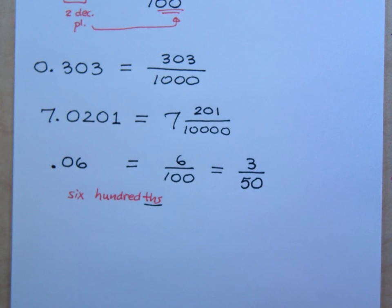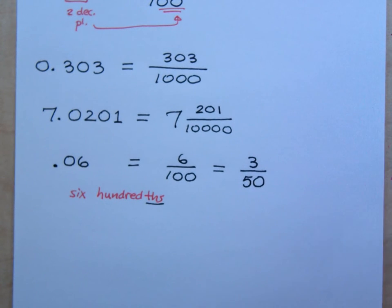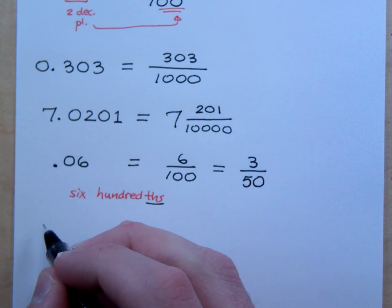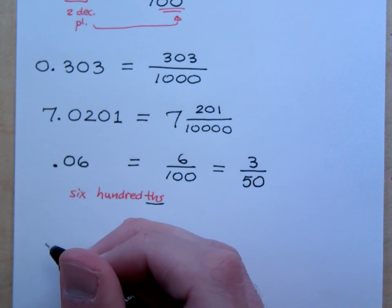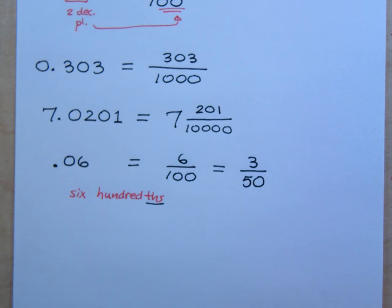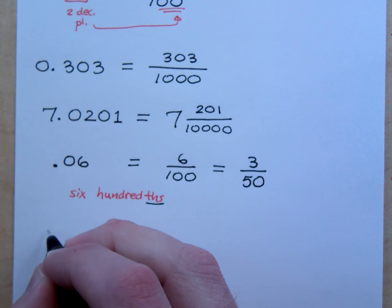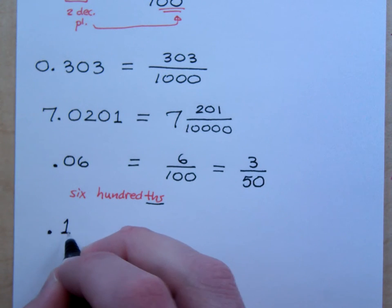You ever had a parent say they might do things to within an inch of your life? Maybe if you're from an older generation. You know what kind of crazy parents you have when they say that they're going to do that to within one one-hundredth of an inch of your life. See, that's even closer. You should be even more scared about that.